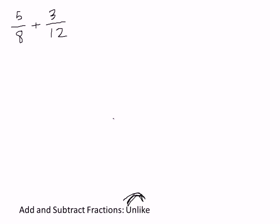The way I'm going to show you is different than the book, and it reveals the meaning of all the steps and why we're allowed to do what we do. Step 1: we have to list all the prime factors — specifically the prime factors of the denominators. We're not allowed to add across the top unless these are the same, so we have to figure out how to make them the same. We'll list the prime factors for both 8 and 12.